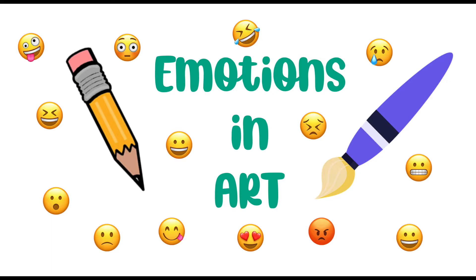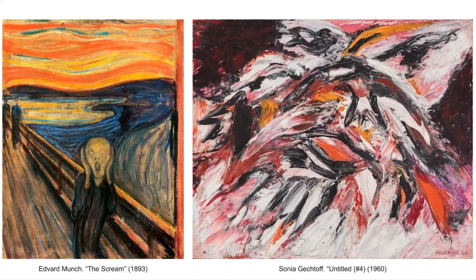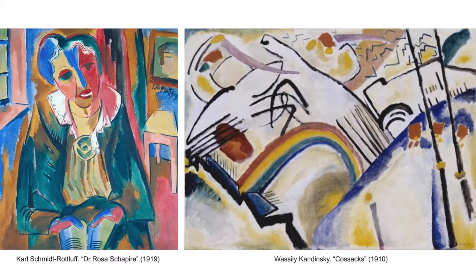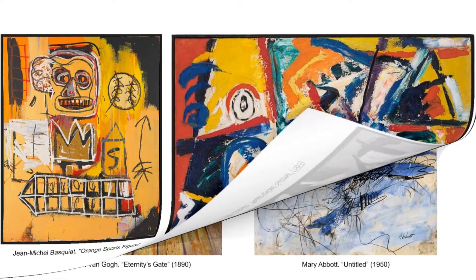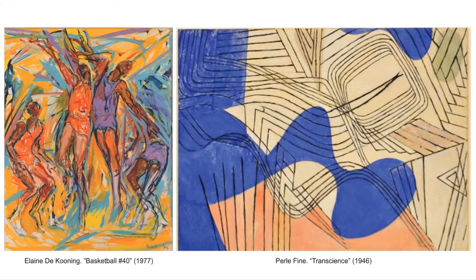Now let's take a look at some example works of famous art that shows emotion through colors, shapes, and lines. Do these paintings capture the feelings of being anxious or distressed? Joyful or creative? Tired or worried? Happy or excited? Discouraged or frustrated? Hyper or energetic?